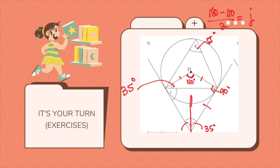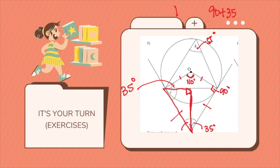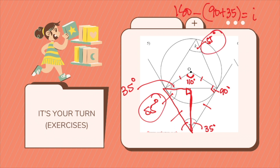Since both of these angles are 35 degrees each and the tangent forms 90 degrees here, J equals 180 minus 110 divided by 2, which gives 35 degrees. For I: since we have a right-angle triangle with 90 and 35, I equals 180 minus 90 minus 35, which is 55 degrees. You could also use the theorem that alternate angles from the center to your tangent will be equal.